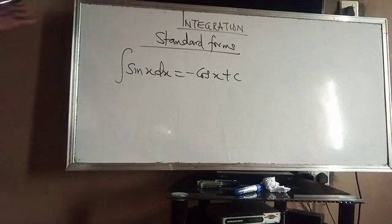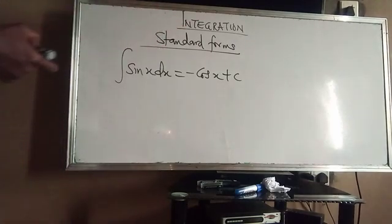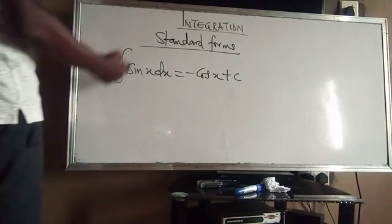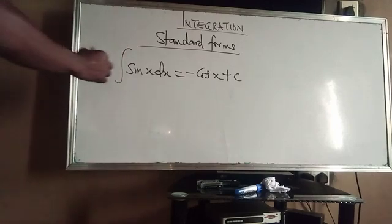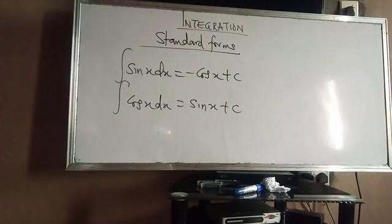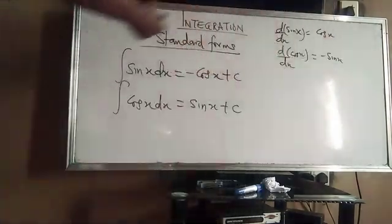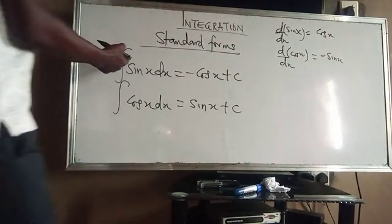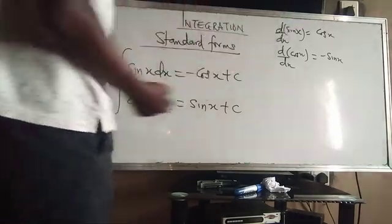That is the standard — every time you integrate sin x dx, the result should be minus cos x plus C. The C here is an arbitrary constant that must be added to any indefinite integral. Indefinite integrals are those without limits — there is no upper limit and no lower limit. So the integral of cos x dx will be sin x plus C. Recall from our previous video: when we differentiate sin x we get cos x, and when we differentiate cos x we get minus sin x, so these are opposites of each other.